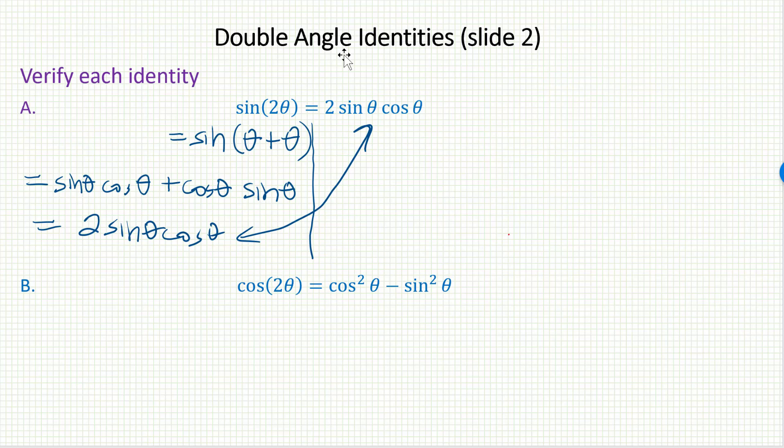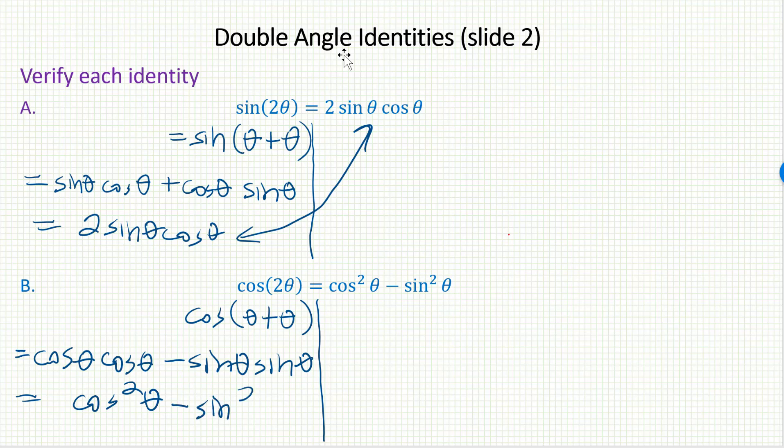We can do something similar here for cosine. Cosine of 2 theta is equal to cosine of theta plus theta. I can go ahead and use the sum identity for cosine. That's the one that went cosine first, cosine second minus the sign changes in the middle, sine first, sine second. And you can see how easy this is. This becomes cosine squared theta and the other one becomes sine squared theta. And that's the identity. We have once again verified it.